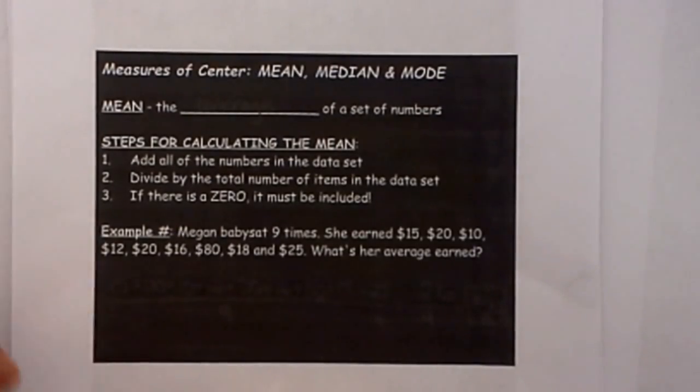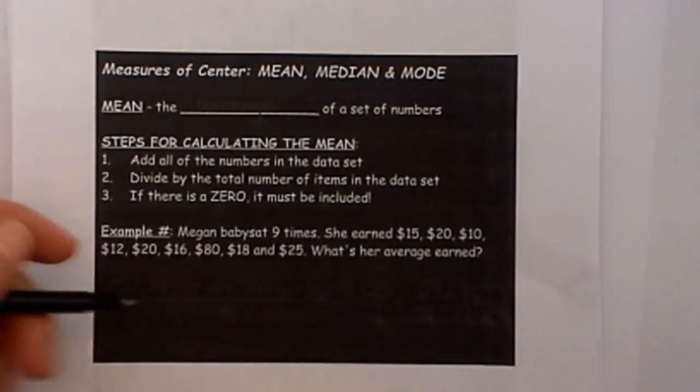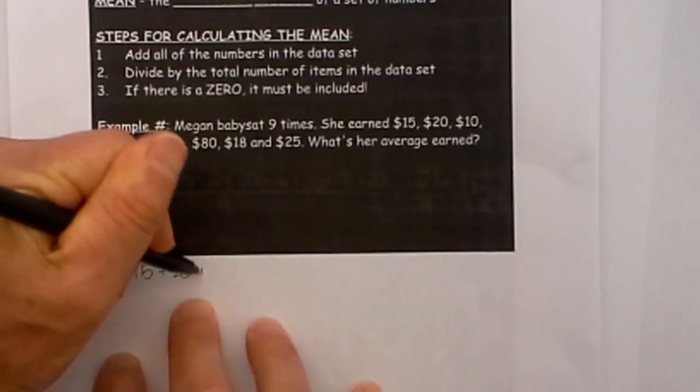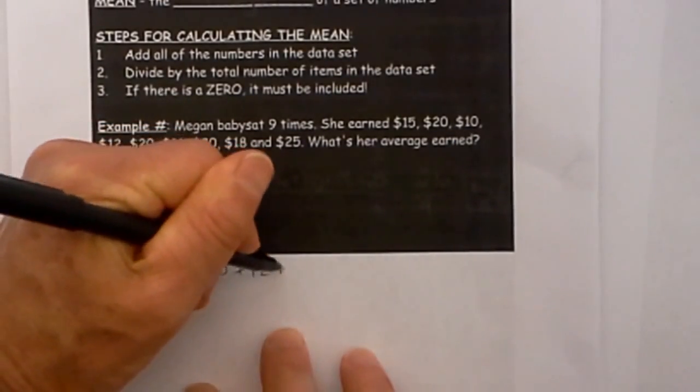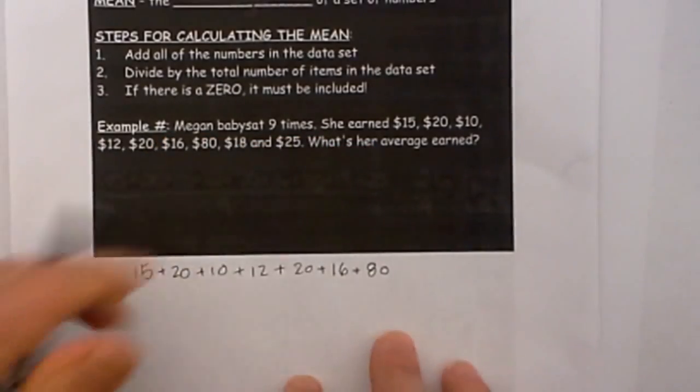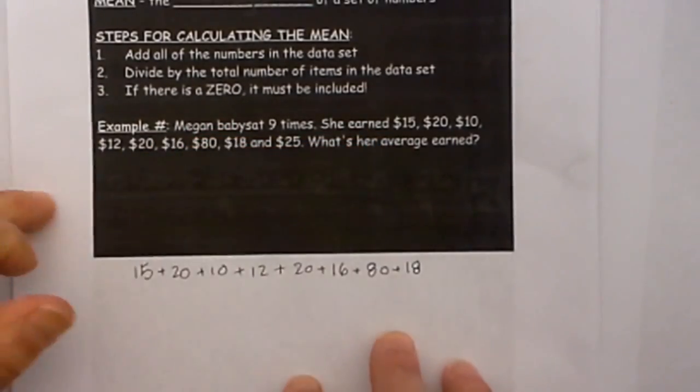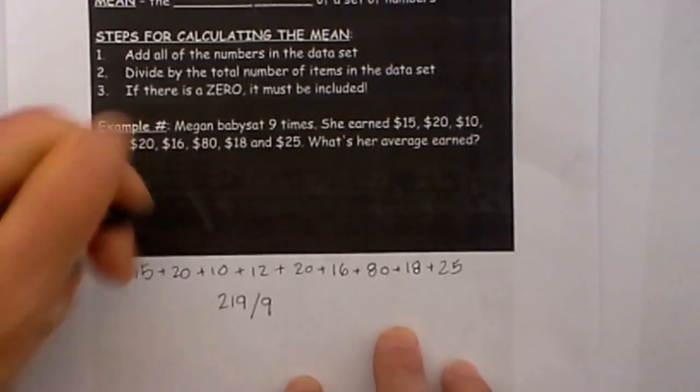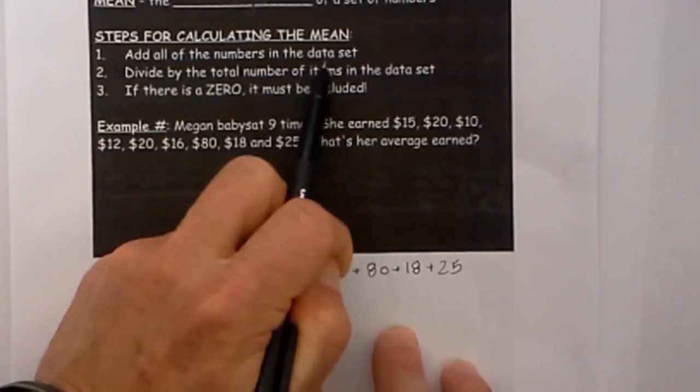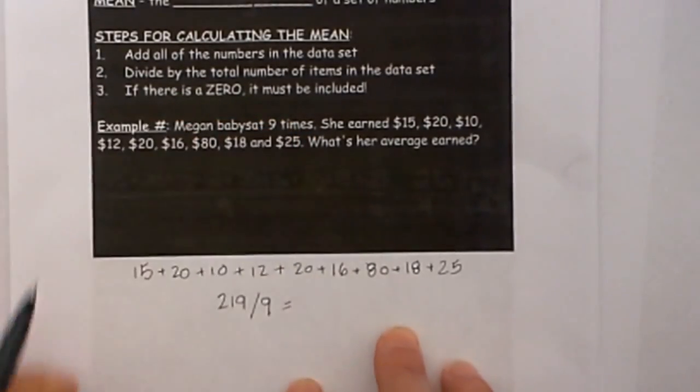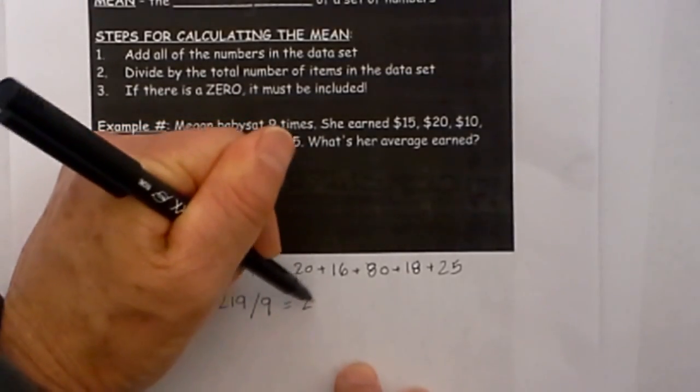So let's look at the very first example. We have Megan babysat nine times. She earned 15 plus 20 plus 10 plus 12 plus 20 plus 16 plus 80 plus 18 and 25. Now if you add all of these numbers together you get 219 and then we are going to divide this by nine. Why nine? Because remember divide by the total number of items in the data set. And if you divide 219 by nine that is going to equal $24.